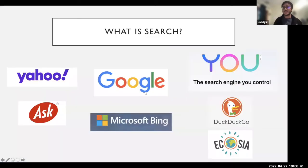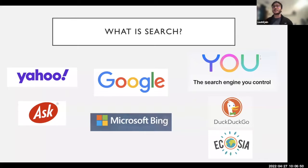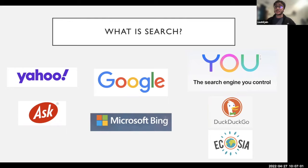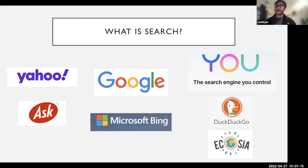So basically, what is search? You've all used search engines in the past — everybody uses search multiple times a day. Previously there were search engines like Yahoo and Ask. Google is kind of the dominant player in the market right now. There's also Bing, and a variety of privacy-focused options like DuckDuckGo. Ecosia focuses on social good — when you search, they plant trees. I work at You.com, which is a company focused on personalized search as well as private search.